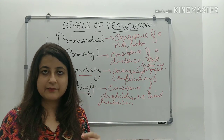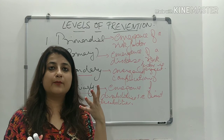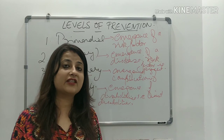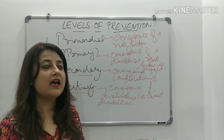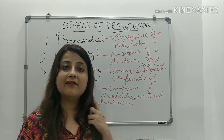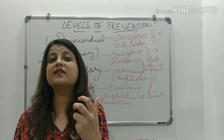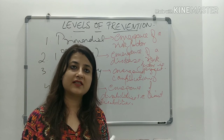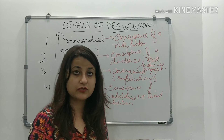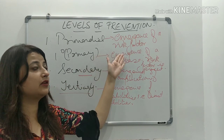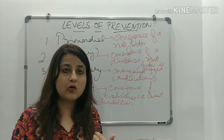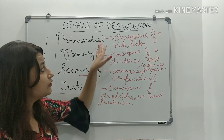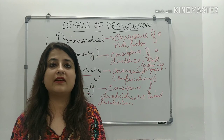Let us understand by an example. Suppose in your college, juniors or freshers come and a new batch joins. How will you implement primordial level? You will tell them that they should not start smoking or drinking, assuming they have not started yet. So you are trying to prevent the emergence of a risk factor — smoking and drinking are risk factors for cardiovascular diseases. That is how we apply primordial level of prevention.